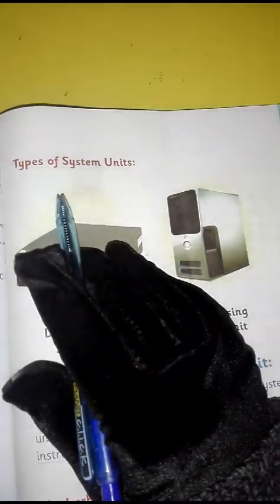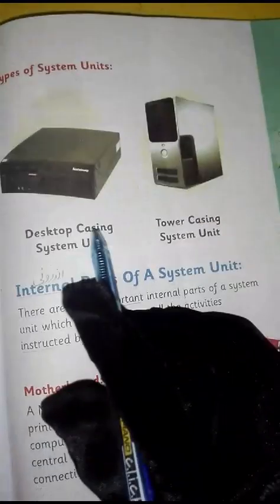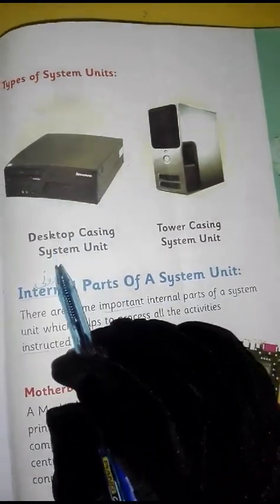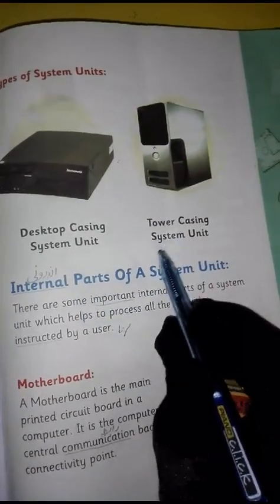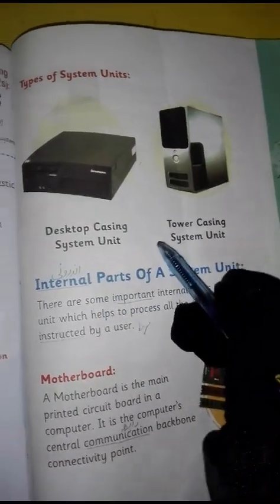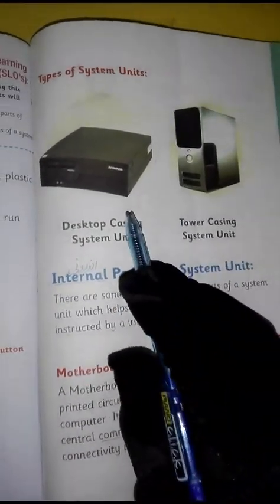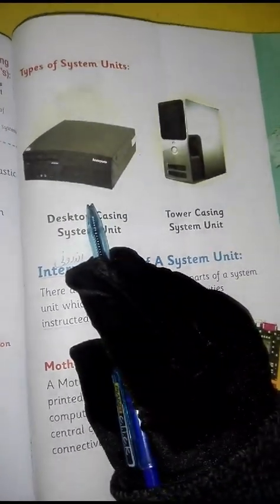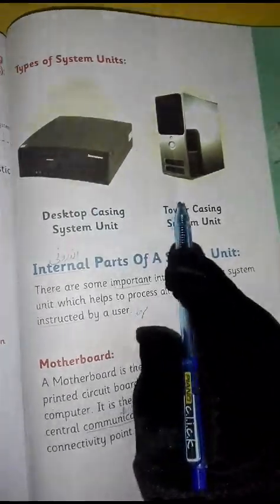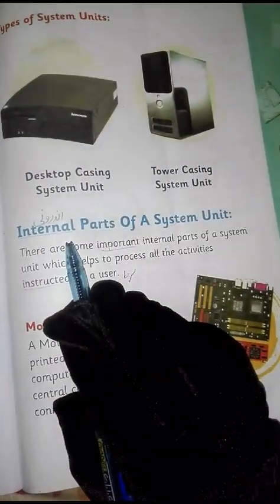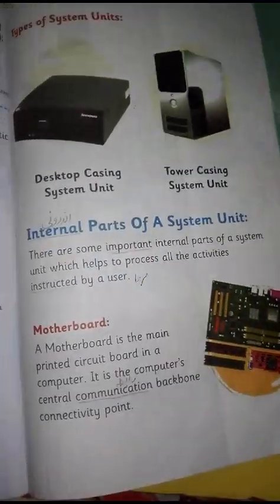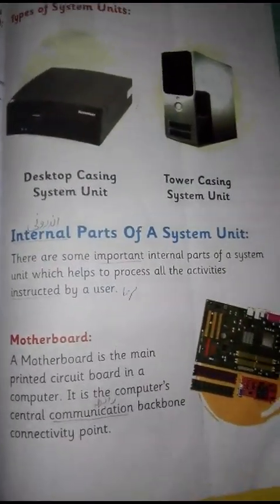Types of computer casings: Desktop casing and Tower casing. These come in two shapes — Horizontal shape and Vertical shape. Now we move on to the internal parts of a system unit.